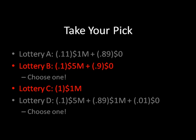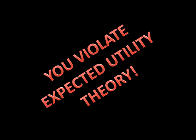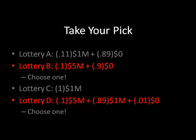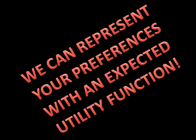Did you choose lottery C and lottery B? If so, you violate expected utility theory. What about lottery A and lottery D? Once again, you violate expected utility theory. But if you chose A and C, or B and D, or were even indifferent between A and B as well as between C and D — congratulations! We can actually represent your preferences with an expected utility function.